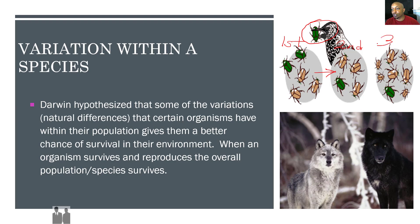By the time we get to this third generation, we have seven brown color beetles and only one green color beetle, because their natural variation of color gives the brown color beetles a competitive advantage. Overall, it allows the entire beetle population to survive and reproduce.